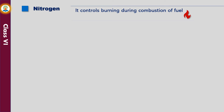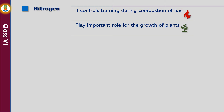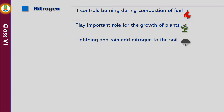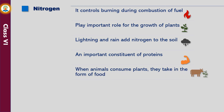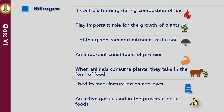Nitrogen controls burning during combustion of fuel. The compounds of nitrogen play an important role in the growth of plants, as free nitrogen cannot be absorbed by plants. Lightning and rain add nitrogen to the soil in the form of molecules such as nitrates. It is an important constituent of proteins. When animals consume plants, they take it in the form of food. It is used to manufacture drugs and dyes. Nitrogen being an inert gas is used in the preservation of foods.